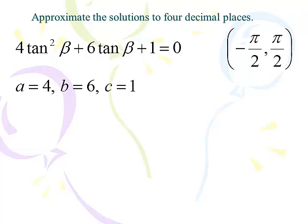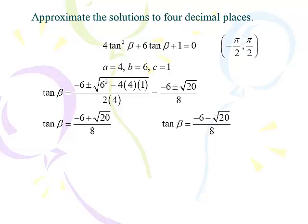Let's set up our quadratic formula. Tangent β equals negative 6 plus or minus the square root of 6² minus 4 times 4 times 1, all over 2 times 4. That gives negative 6 plus or minus √20 over 8. Something important about tangent: it's definable for all values, so we can always plug anything into inverse tangent — you never get no solution. Both sides are guaranteed to work. However, since we've cut the circle in half, we'll only get one answer from each side.